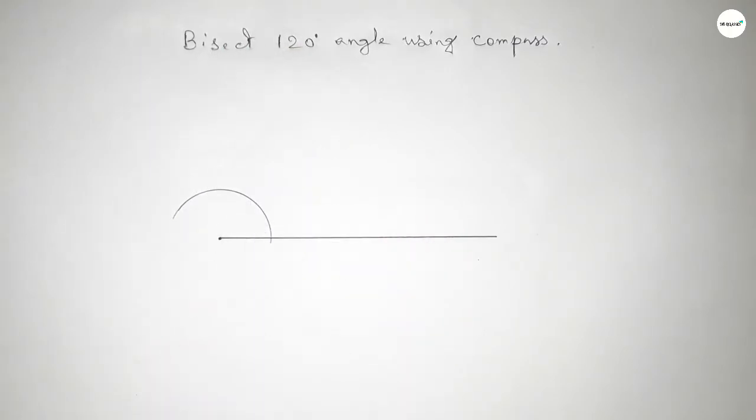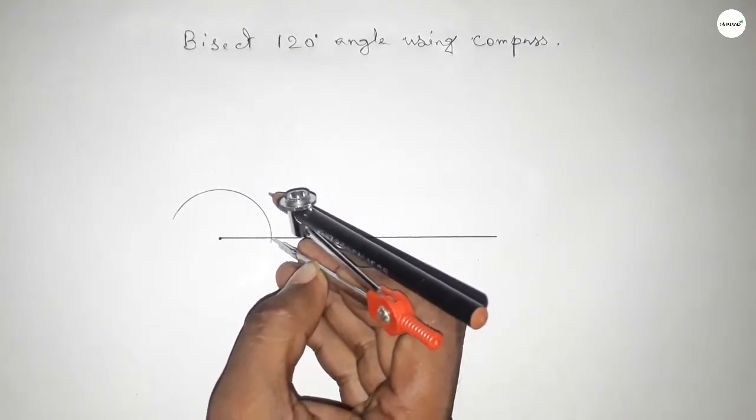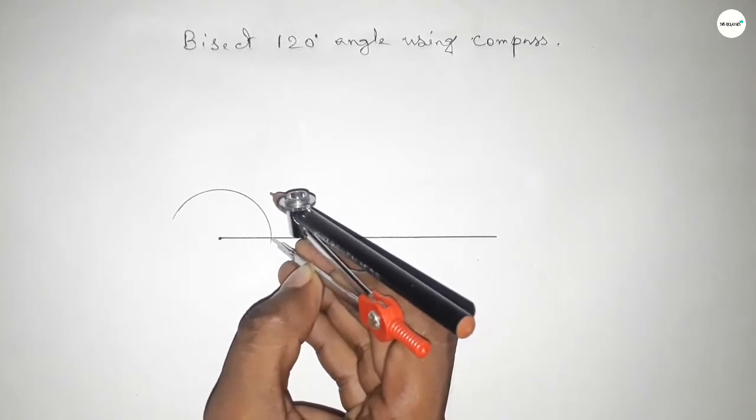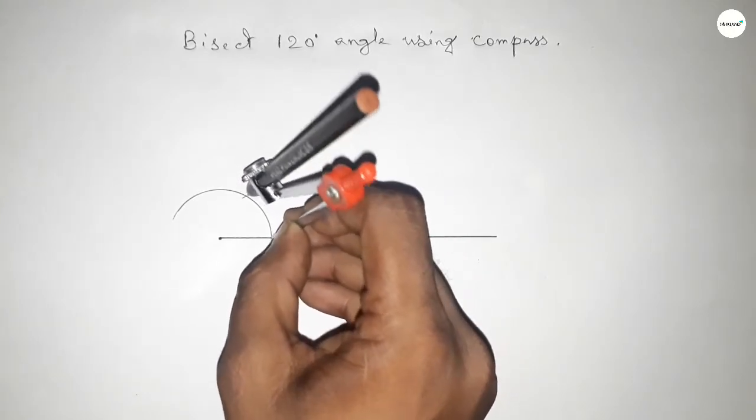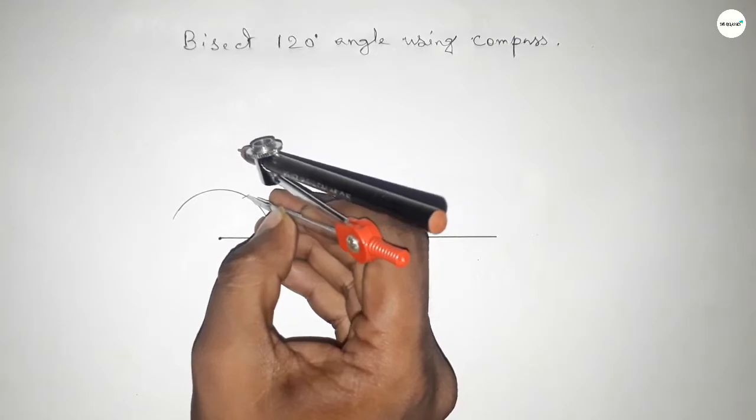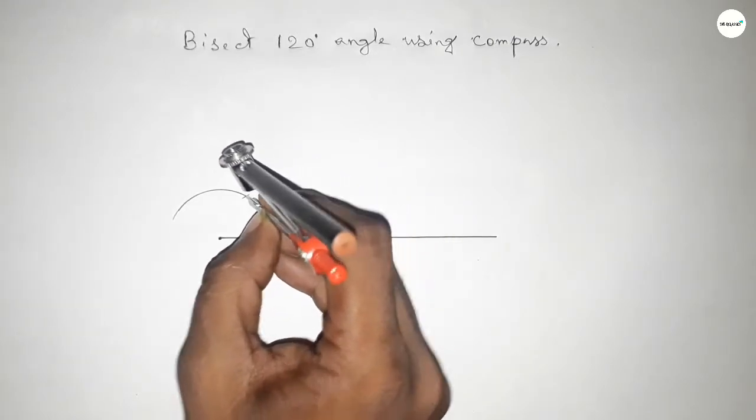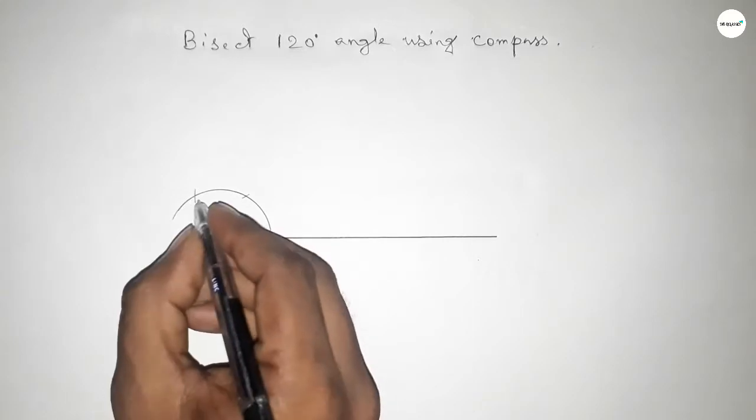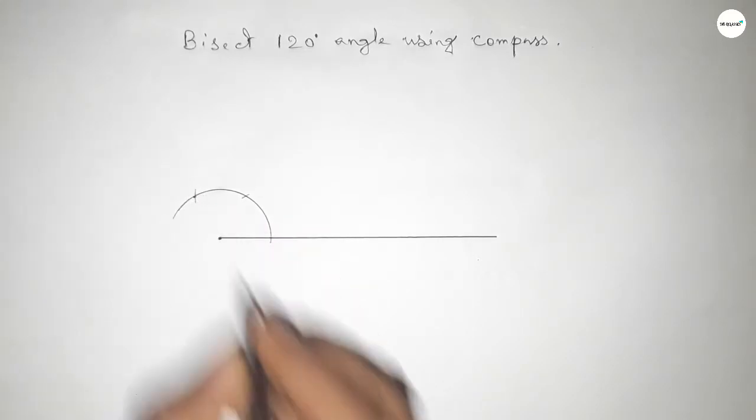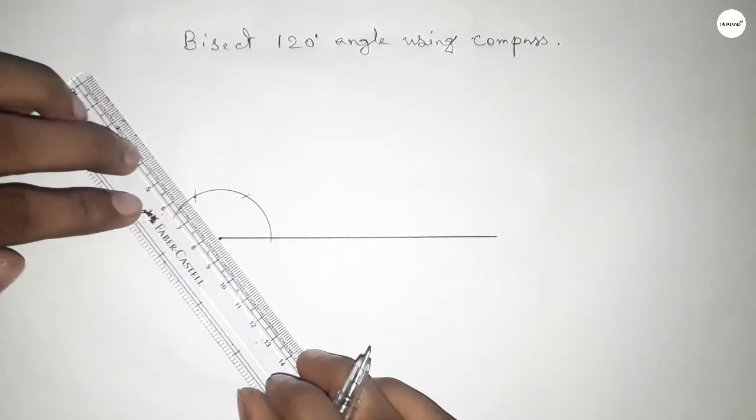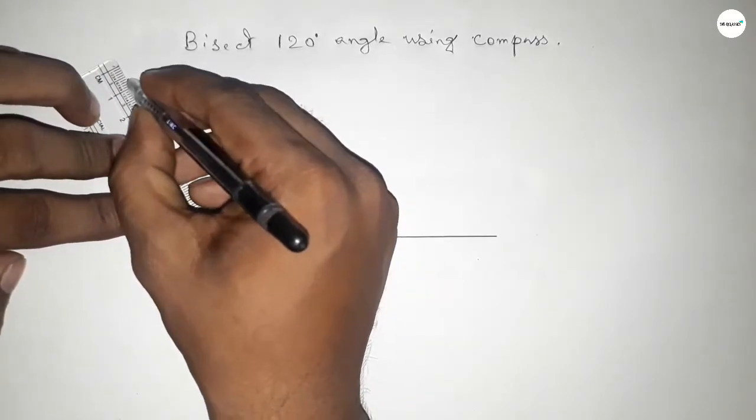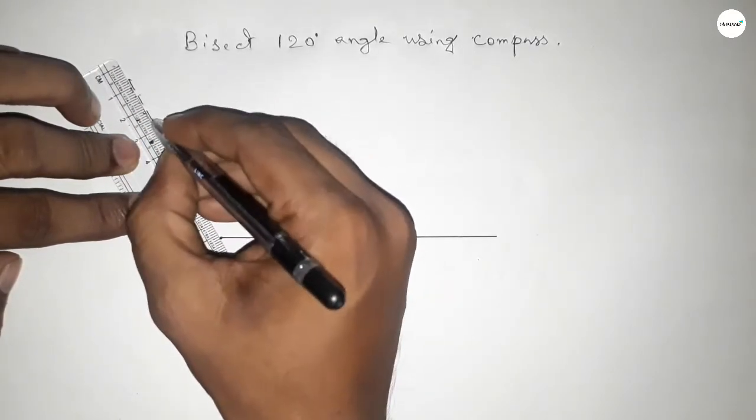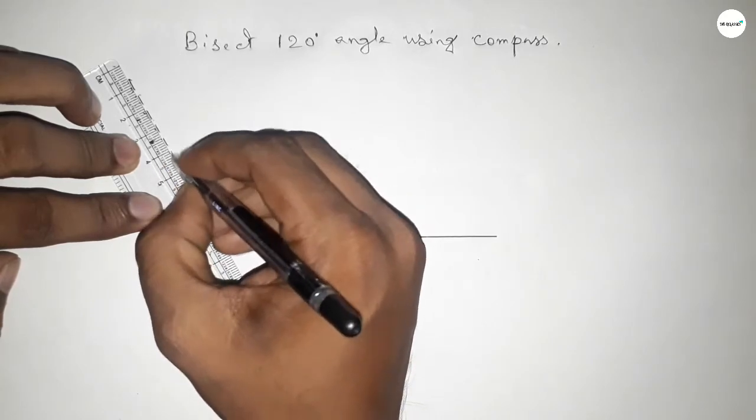With the same length, putting the compass here and cut here. Again putting the compass here with the same length and cut here. Now joining this to get a 120-degree angle.